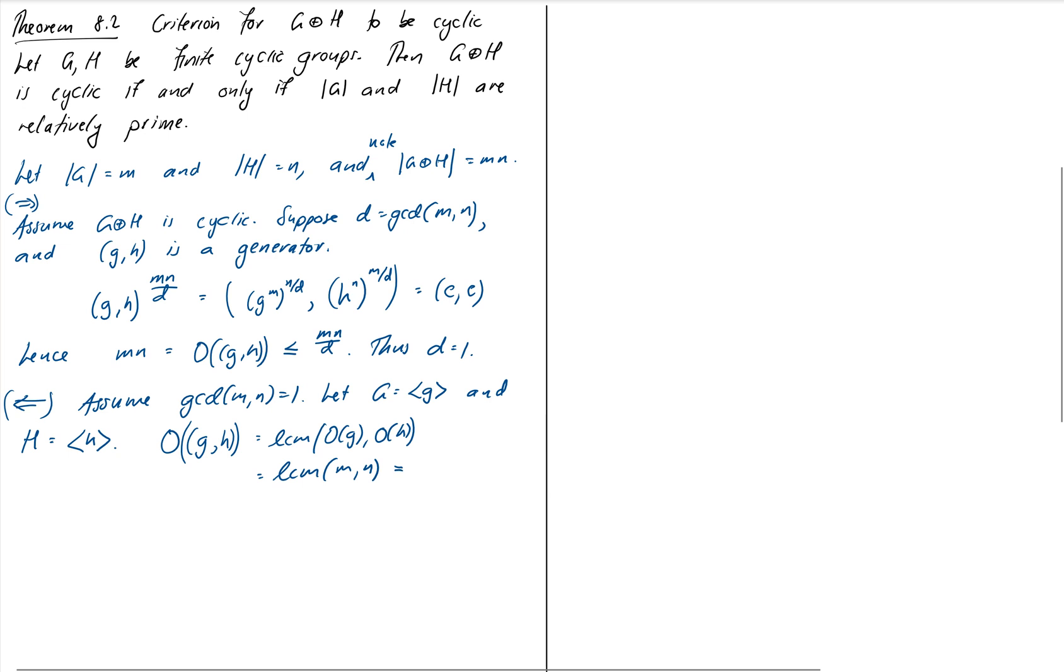Because we've assumed M and N are relatively prime, that's just equal to M times N, which is the order of our group itself. Therefore, this element (g,h) is a generator of our cyclic group. That completes our proof. We've shown that if M and N are relatively prime, i.e. GCD of M and N is 1, then we found a generator, so it's cyclic. And we first showed if it was cyclic, then M and N must be relatively prime. These two things are equivalent statements.